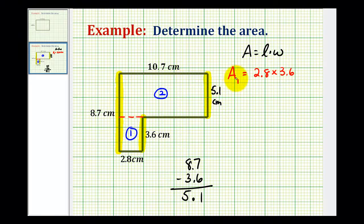Which means the area of region two can be found by determining the product of 10.7 centimeters and 5.1 centimeters. Now we'll determine these two products and determine the sum of the two areas. So we have 2.8 times 3.6.